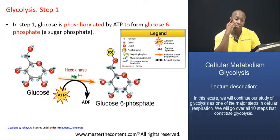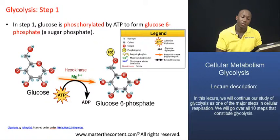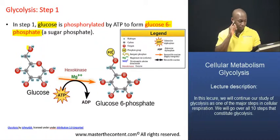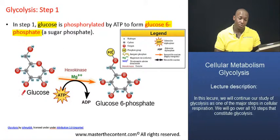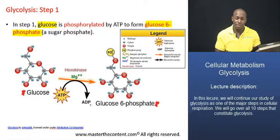In step 1, glucose is phosphorylated by ATP to form glucose-6-phosphate. As you can see at the bottom of the screen, glucose is being converted into glucose-6-phosphate, and this step consumes a molecule of ATP. That high-energy molecule provides energy to catalyze the reaction in the forward direction. ATP is converted into ADP, and that high-energy bond is broken and hydrolyzed to drive the forward reaction.